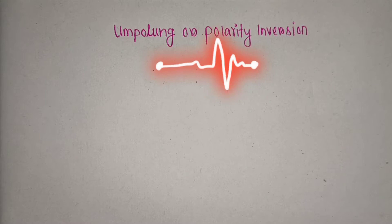Umpolang or polarity inversion in organic chemistry is the chemical modification of a functional group with the aim of temporarily reversing the polarity of that group.